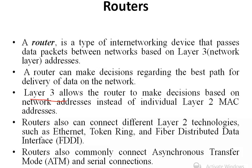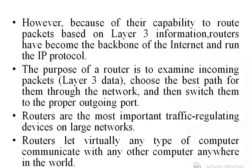A router can also connect different layer 2 technologies such as Ethernet, Token Ring, and Fiber Distributed Data Interface (FDDI). Routers also commonly connect asynchronous transfer mode (ATM) and serial connections. The purpose of a router is to examine incoming packets' layer 3 data, choose the best path through the network, and switch them to the proper outgoing port.